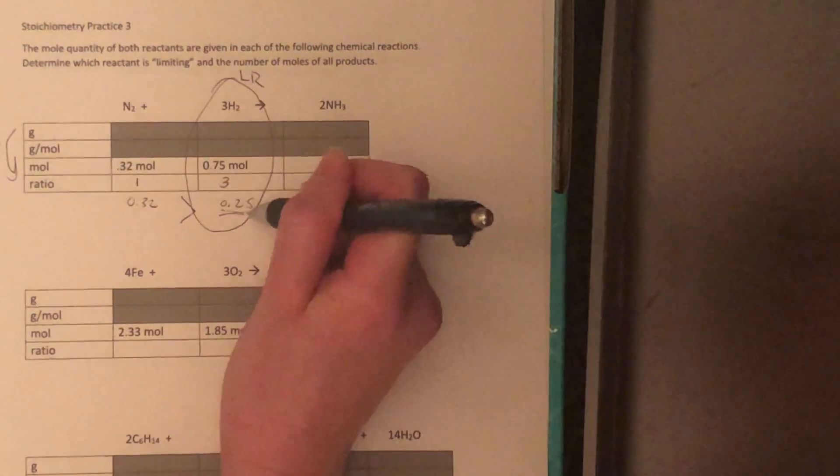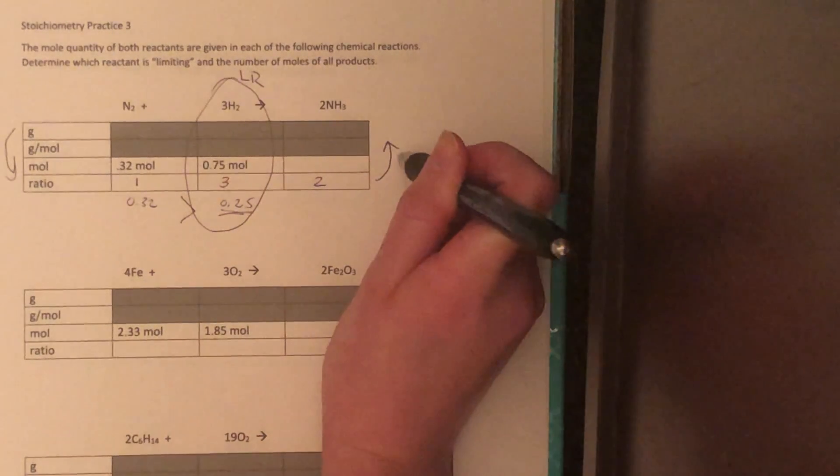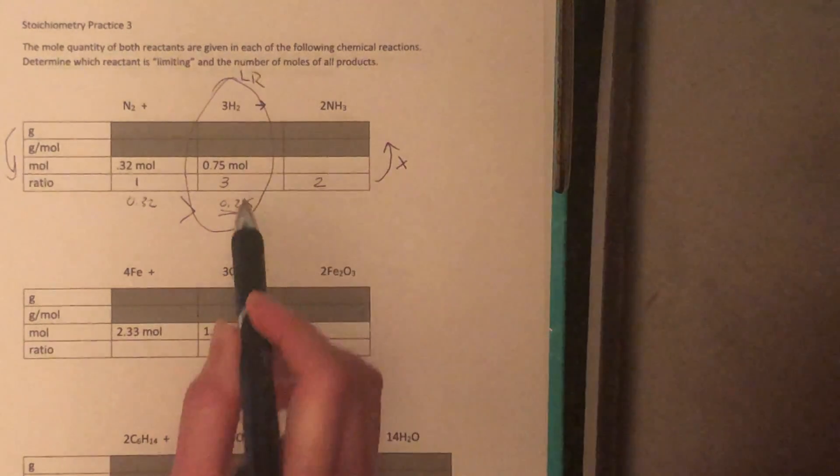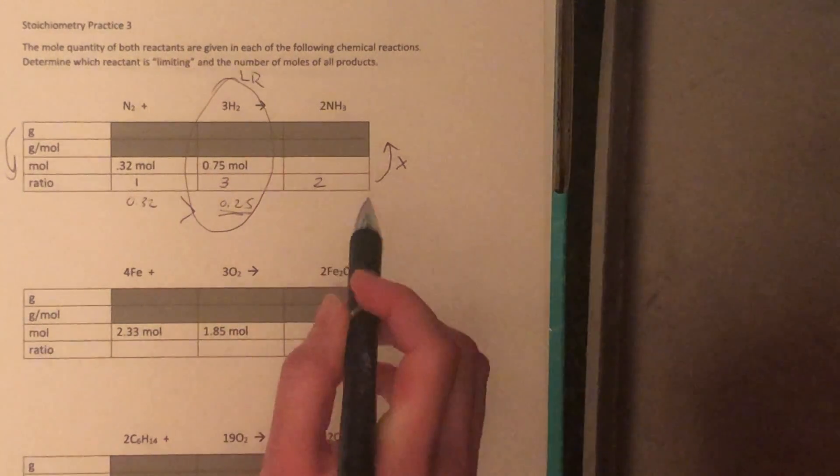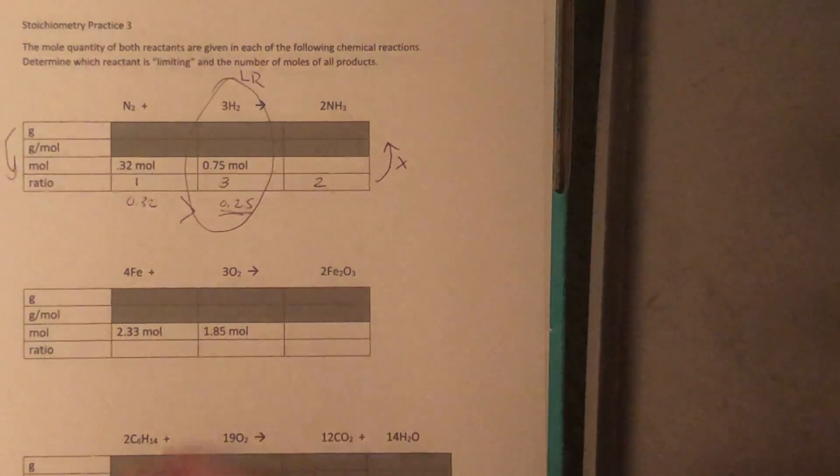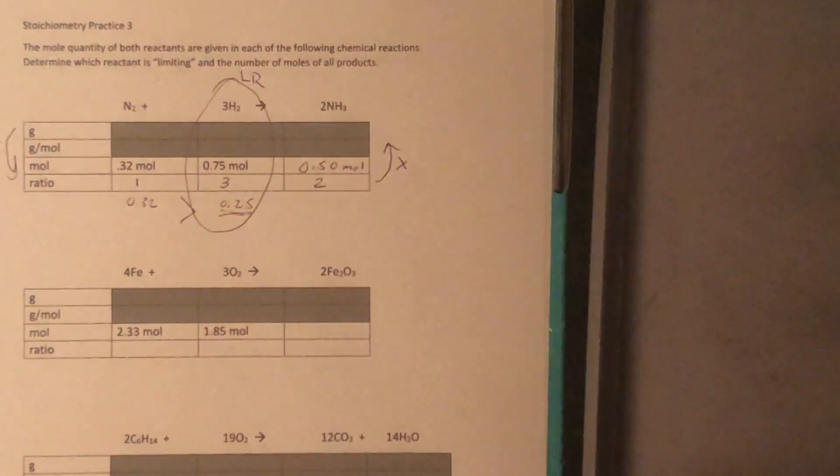This is the number that we're going to go with. Since we go up the table, we're going to multiply. So we're going to use this 0.25. We're going to multiply it by the two here. And that gives us 0.5 moles.